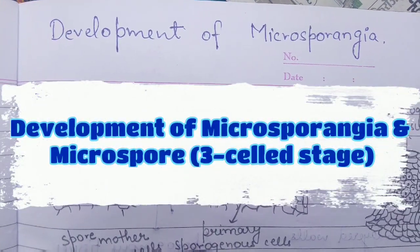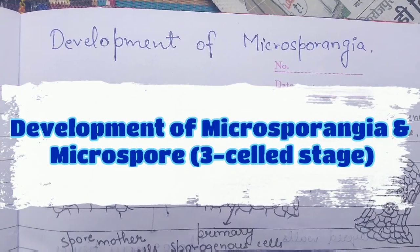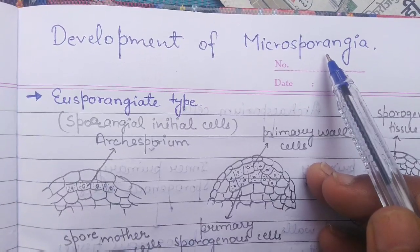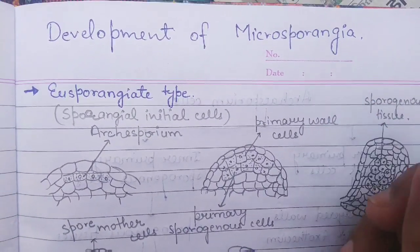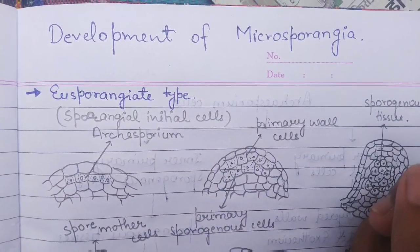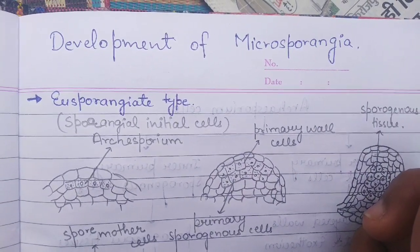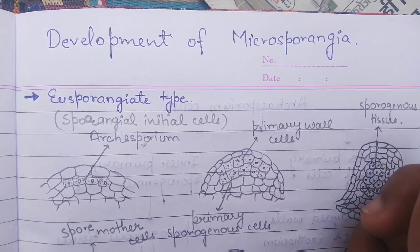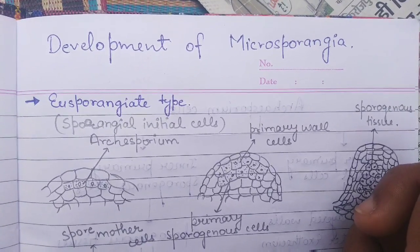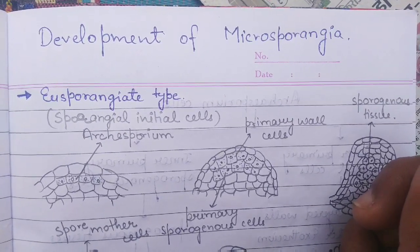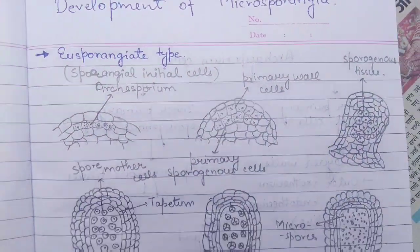Hey friends, in this video we are going to study about the development of Microsporangia of the male cone of Cycas. In the previous video we covered the male cone, Microsporophylls, and Microsporangia introduction. Microsporangia is an oval sac-like structure which bears a large amount of microspores or pollen grains within them. So let's study how the development of Microsporangia occurs.